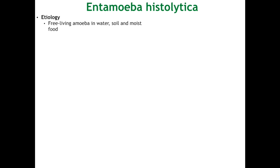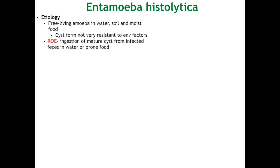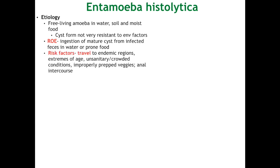Starting off with the etiology: Entamoeba histolytica is a free-living amoeba mainly found in water and on moist food. Its cyst form is not extremely resistant to environmental factors and can only survive outside the host for a few weeks. As with all GIT parasites, the route of entry is ingestion — in this case of the mature cyst — from infected feces in water or food. The major risk factor is travel to endemic regions or being an immigrant from there.